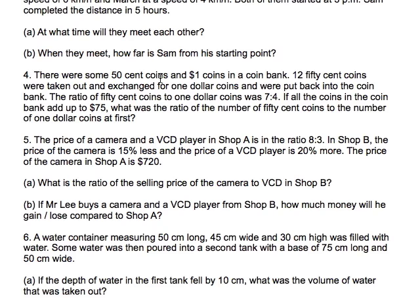So first of all let's read the question. It says there were some 50 cent coins and 1 dollar coins in a coin bank. I don't know what a coin bank is, some of you said that it's actually a tabong, a piggy bank. But anyway, 12 fifty cent coins were taken out and exchanged for 1 dollar coins and were then put back into the coin bank.